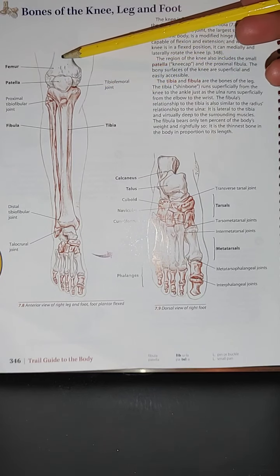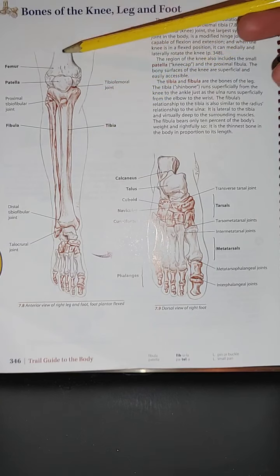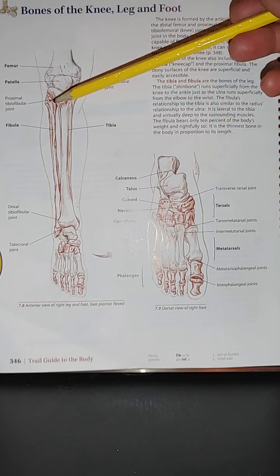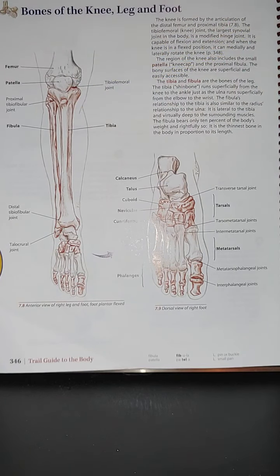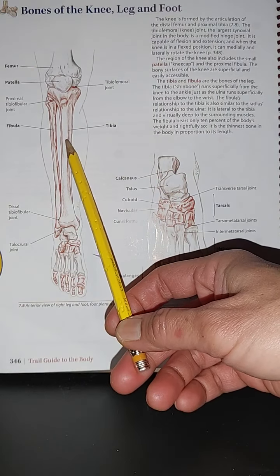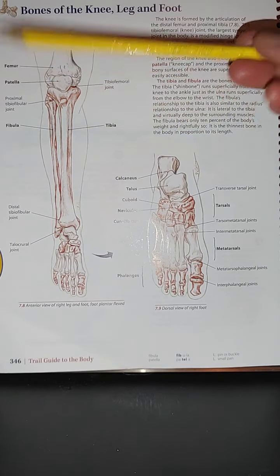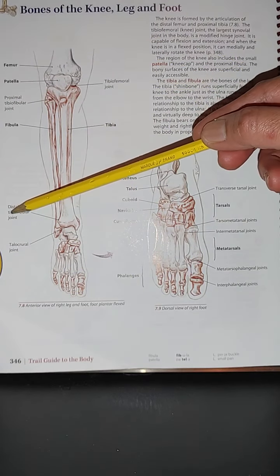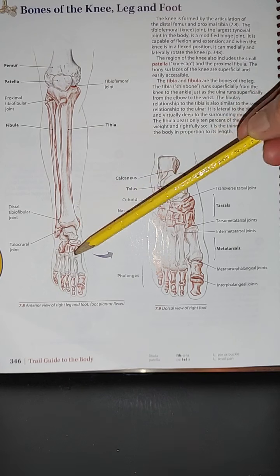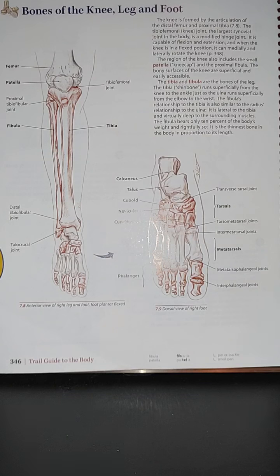The tibial-femoral joint gets its name from the tibia and femur. Then we have the proximal tibial-fibular joint — it's called the tibial-fibular joint because of the tibia and the fibula. Proximal meaning superior, distal meaning inferior. We also have the distal tibial-fibular joint and the talocrural joint.